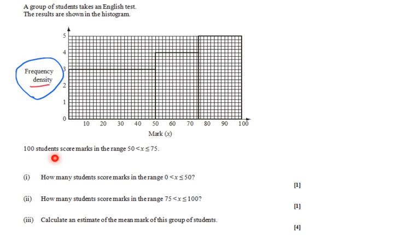A hundred students, they say, score marks in the range from 50 to 75. So let's have a look at that bar from 50 to 75—a hundred students.